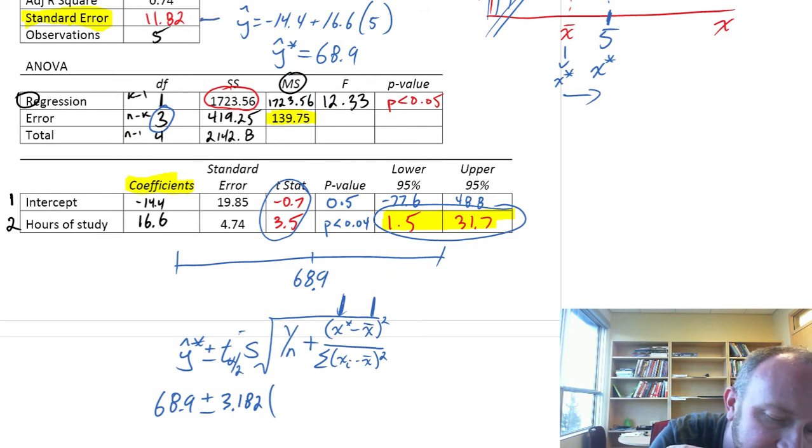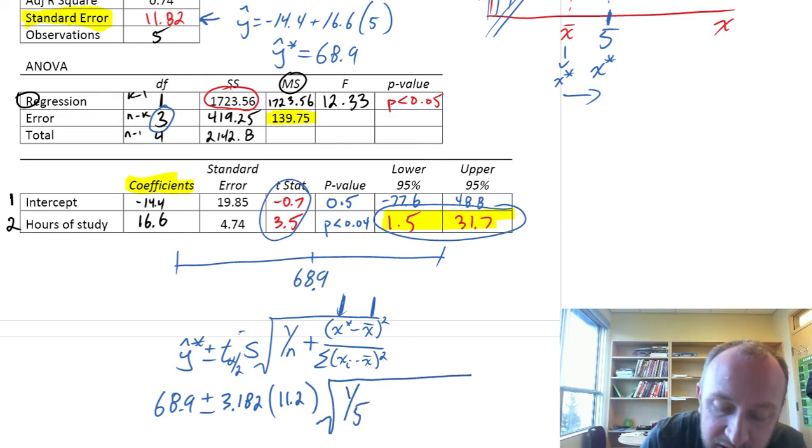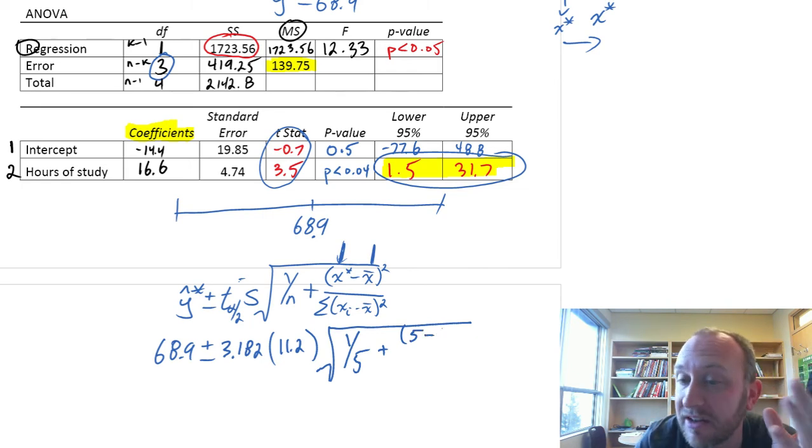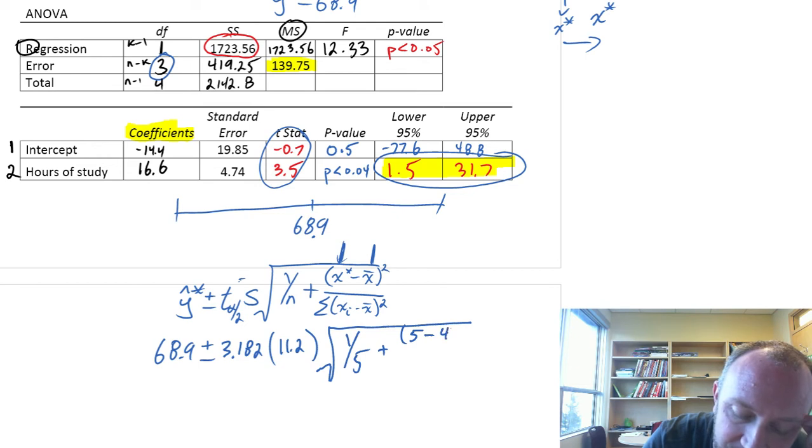That's 11.2 times the square root of 1 over our sample size, 5, plus, here, x star. Our x star is 5. x bar, the mean value for the independent variable, was 4.